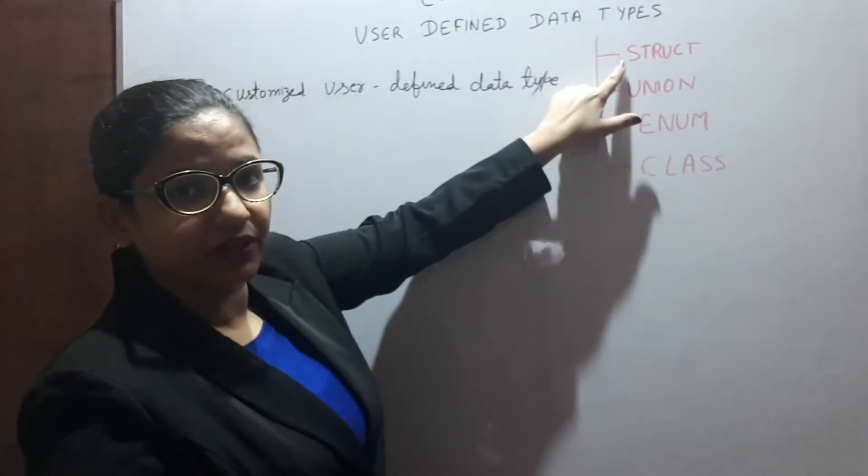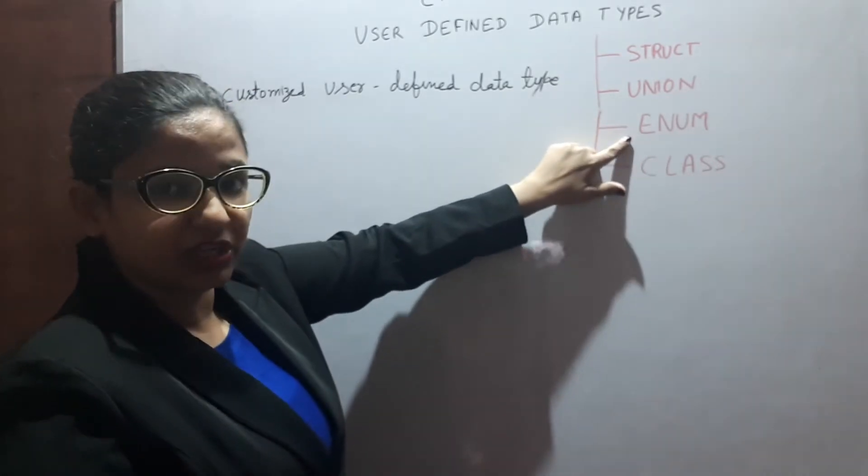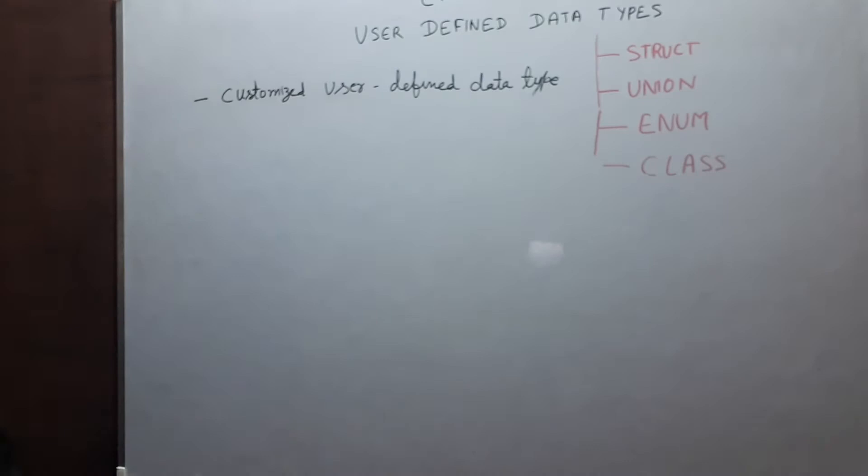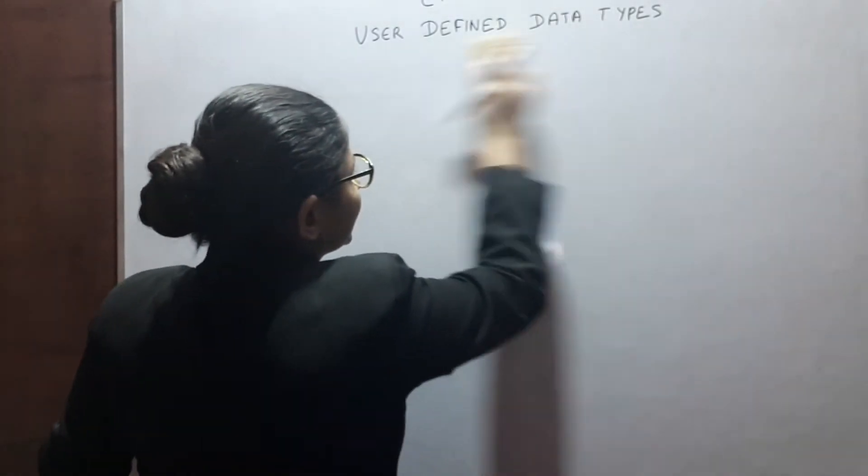Structure, union, enumeration and class. Let's see each in detail.